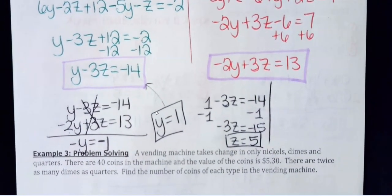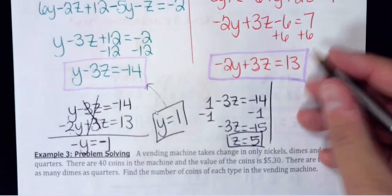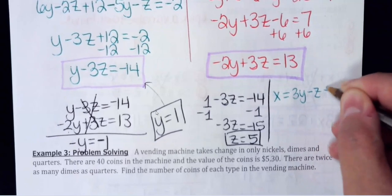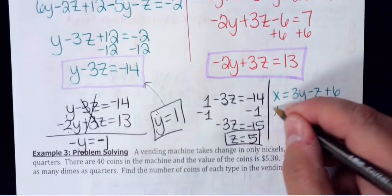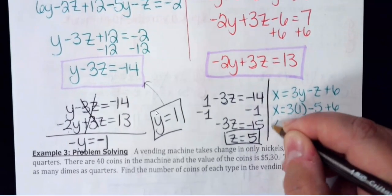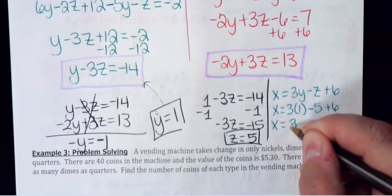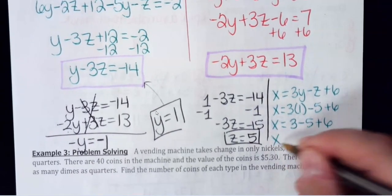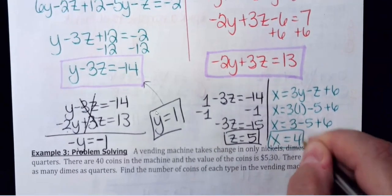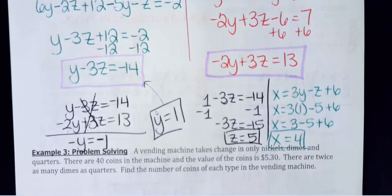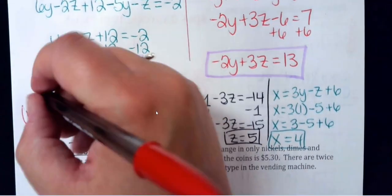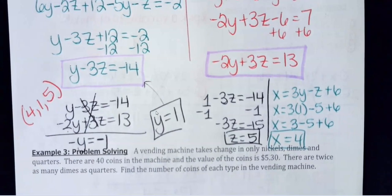Now plug y and z back into the first original equation, which was already solved for x: x equals 3y minus z plus 6. Substituting y equals 1 and z equals 5: x equals 3 times 1 minus 5 plus 6, which is 3 minus 5 plus 6 equals 4. All nice numbers, so we know it's correct. The ordered triple is (4, 1, 5).